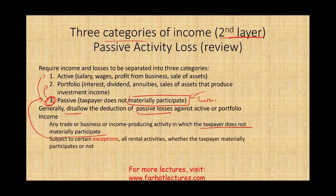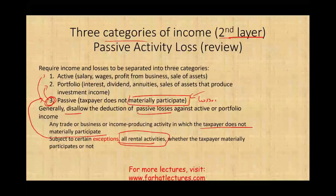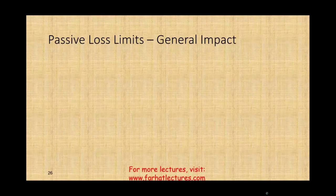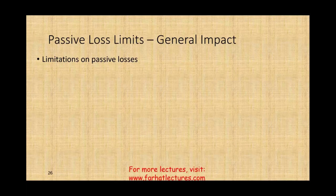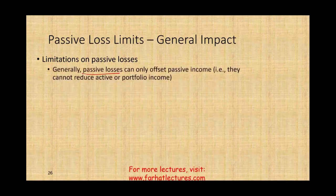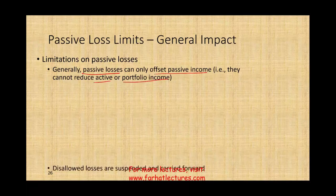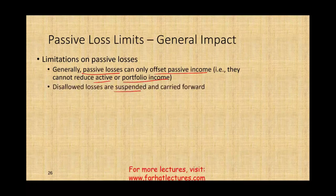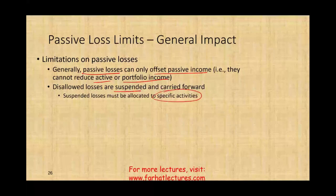Any trade or business or income-producing activity in which the taxpayer does not participate is considered passive, subject to certain exceptions. All rental activities, whether the taxpayer materially participates or not, are always considered passive. Generally speaking, passive losses can only offset passive income — they cannot reduce active or portfolio income. Disallowed losses are suspended and carried forward, and suspended losses must be allocated to specific activities.